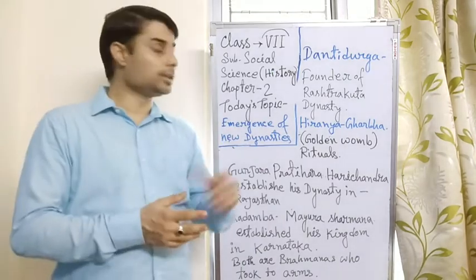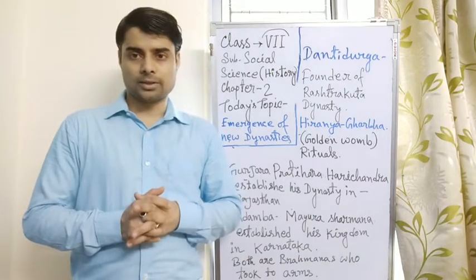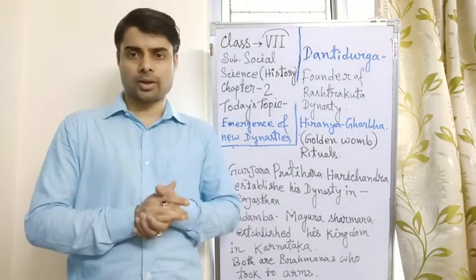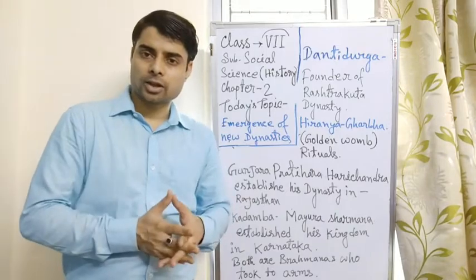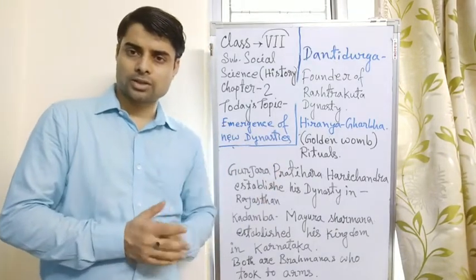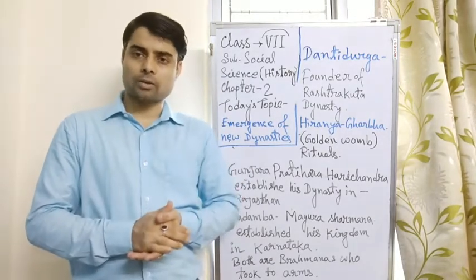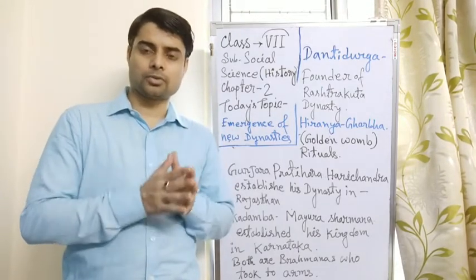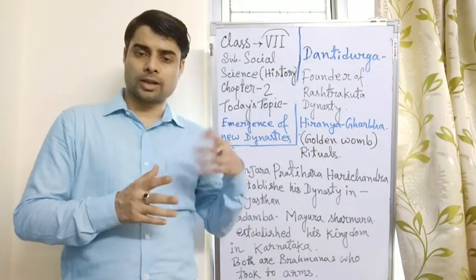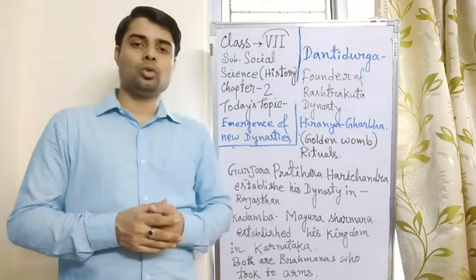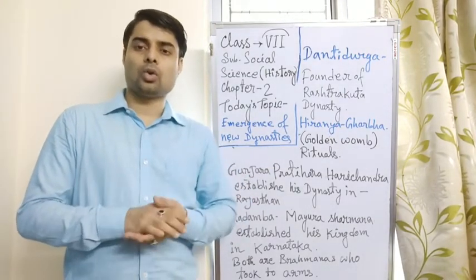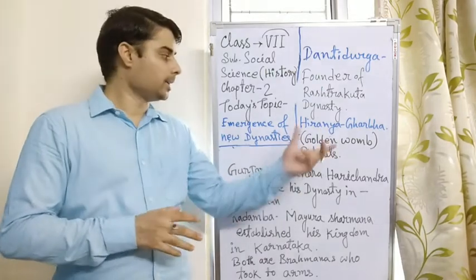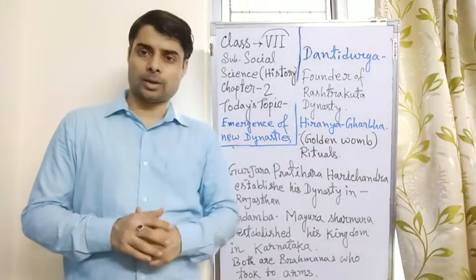So first Dantidurga was a Samanta under the Chalukya rulers. Chalukya rulers ruled in the mid-southern region, in today's some part of Telangana, Andhra Pradesh, Karnataka and Maharashtra. So those regions were ruled by Chalukyas. But Rashtrakuta, the founder of Rashtrakuta dynasty, Dantidurga was a first Maha Samanta. Then he gained his power and wealth, and one day he overthrew his Chalukya overlord and also organized a ritual called Hirannagarbha, means Golden Womb ritual.